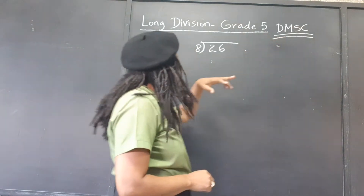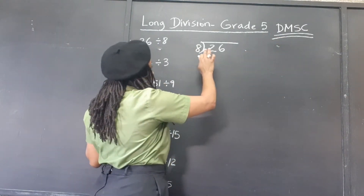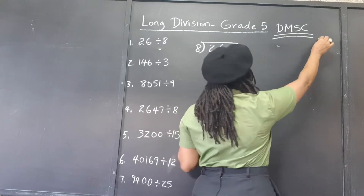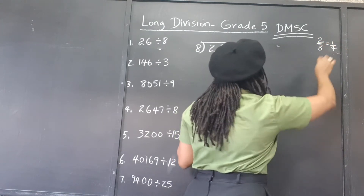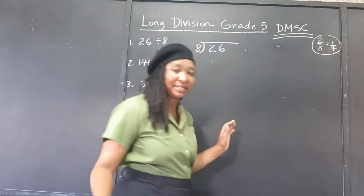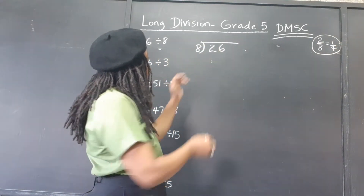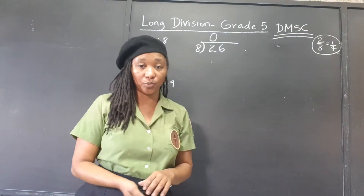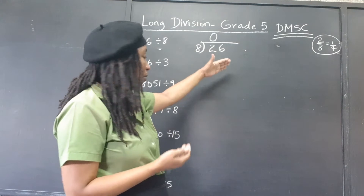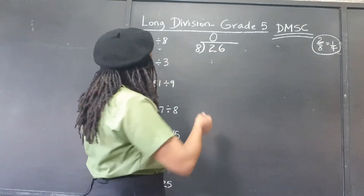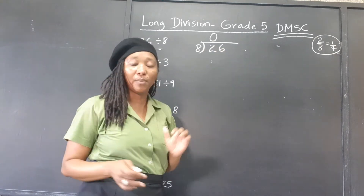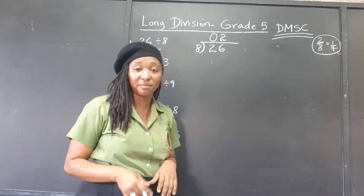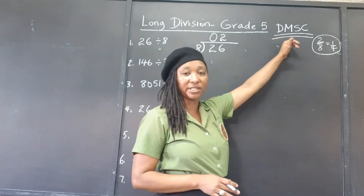The first thing we do is divide: 26 divided by 8. Now 2 cannot be divided by 8 — we could get a fraction, but we're dividing whole numbers. So 8 cannot go exactly into 2. What we say is: 8 into 26 — how many times can 8 go into 26? That is 2 times. That's the division part of it.